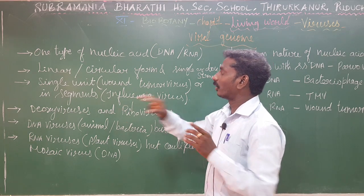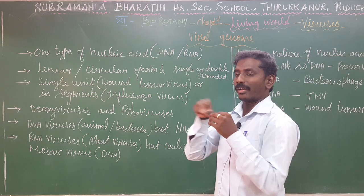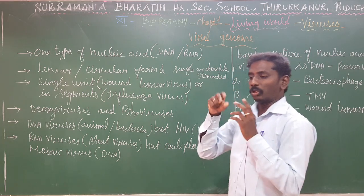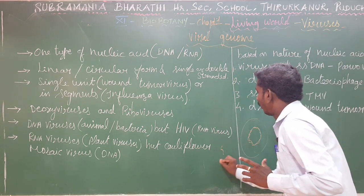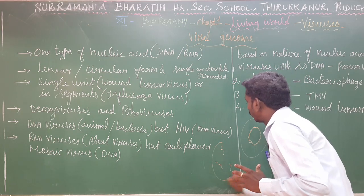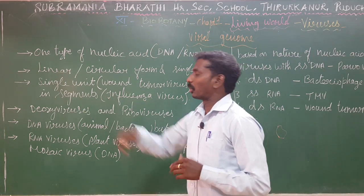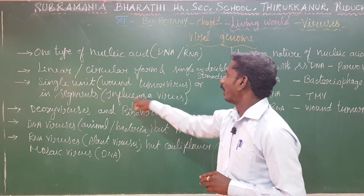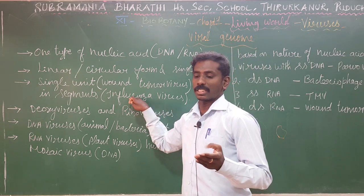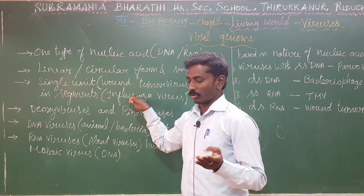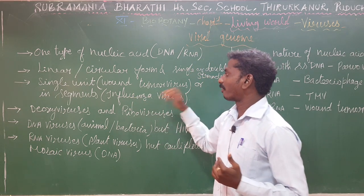The nucleic acid can also be segmented — DNA or RNA in two or three pieces. This represents the segmented type of nucleic acid. An example is the influenza virus.